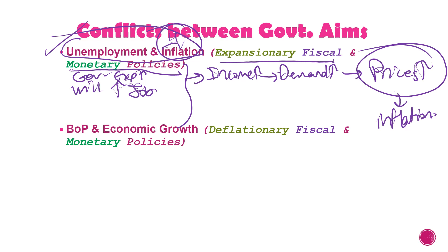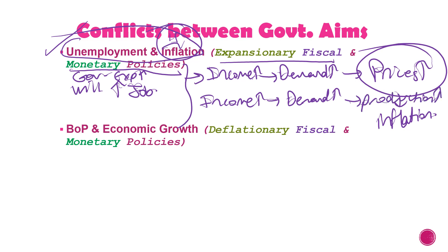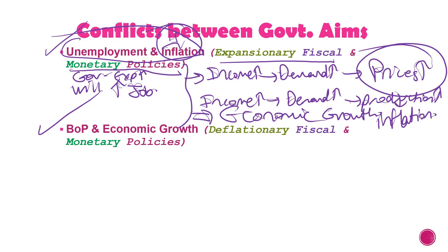Sometimes governments leave the economy as is and use no policy at all. When we have more income, demand increases, production increases, and that leads to economic growth. The second macroeconomic objective conflict: when the government is trying to achieve balance of payments alongside economic growth, it will usually use a deflationary or contractionary fiscal and monetary policy. Income tax increases, therefore imports decrease and the balance of payments improves.